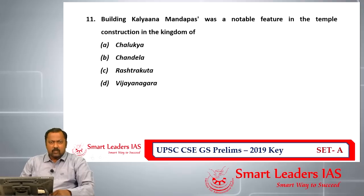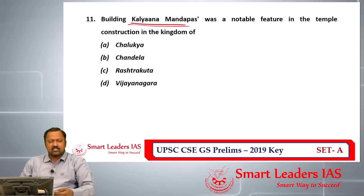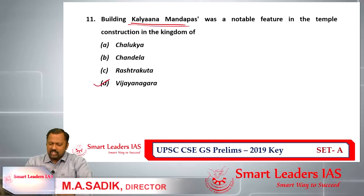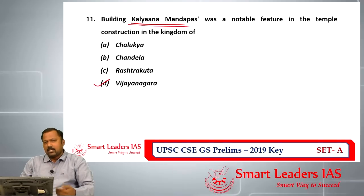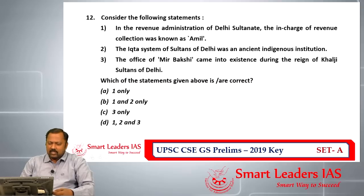Question number eleven is about the Kalyana Mandapa — an additional building added to most temples. The Kalyana Mandapa was a notable feature in temple construction that began during the Vijayanagar period, along with the Amman shrine and Gopuram, which gained prominence in temple architecture during that era. So the answer for question number eleven is D.